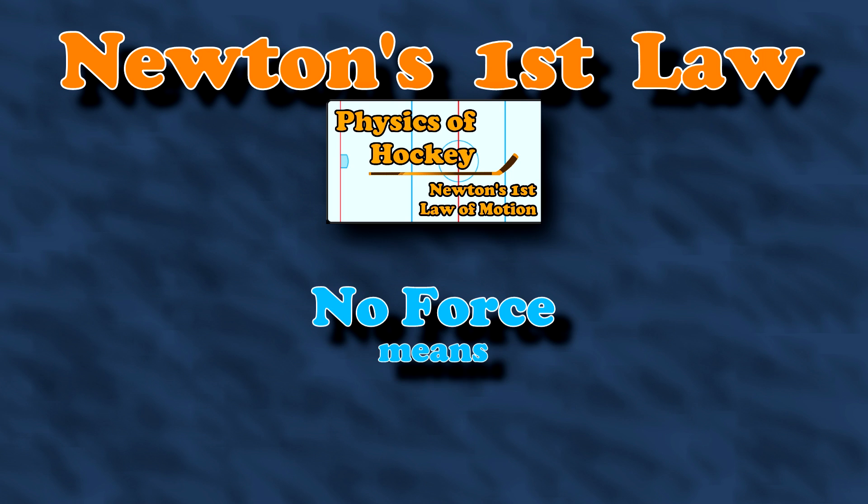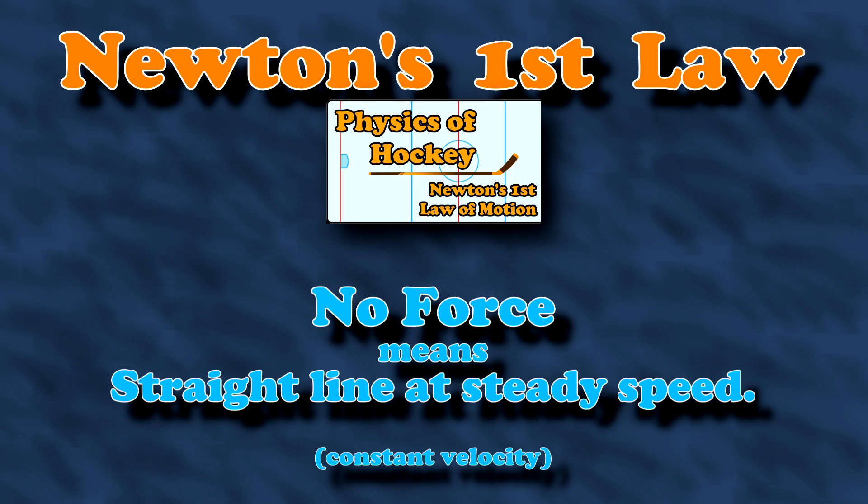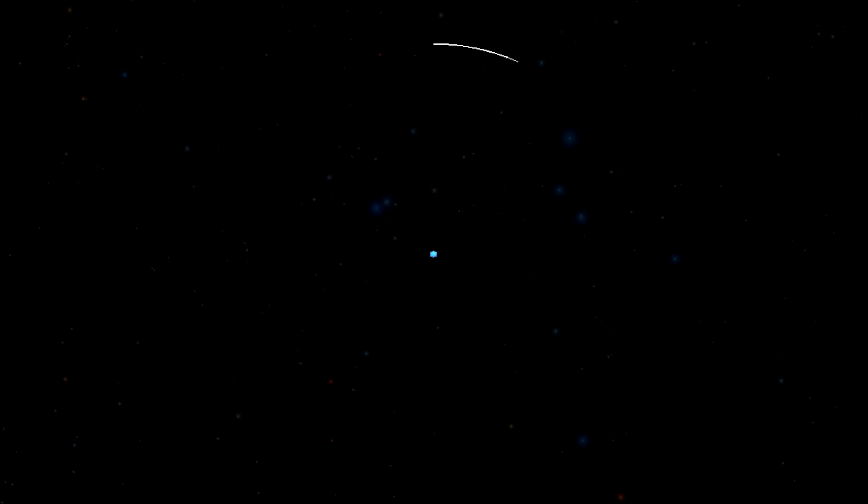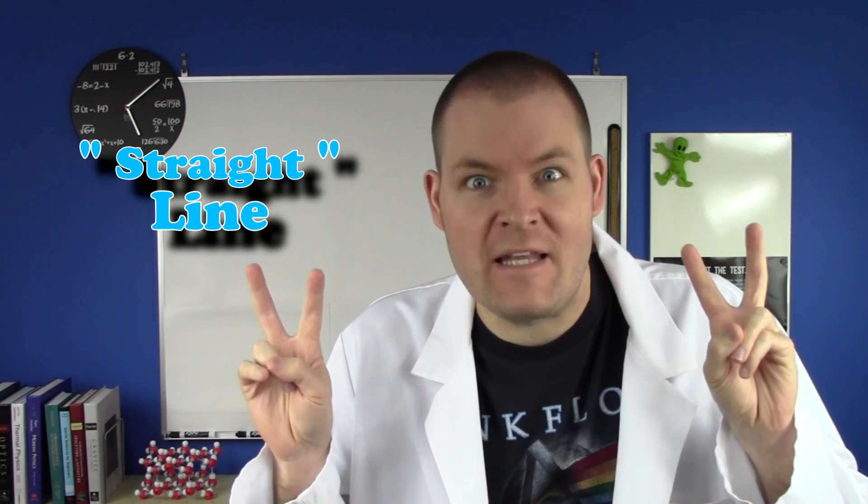According to General Relativity, masses don't actually attract one another. There is no force. Yeah, it is crazy! Remember Newton's first law of motion? It says that no force means you move in a straight line at a steady speed. If gravity isn't a force, then why does the Moon do this around the Earth? WTF, universe! Believe it or not, this comes down to what you mean by a straight line.